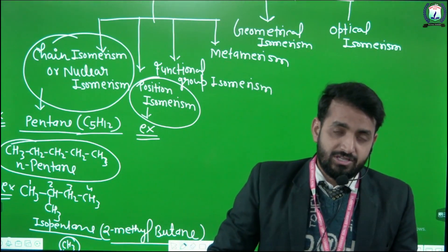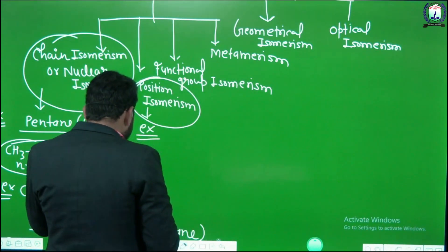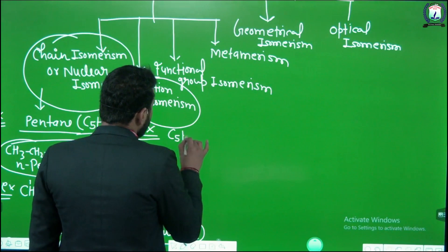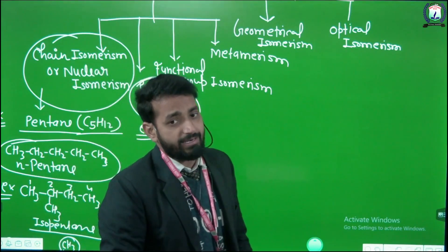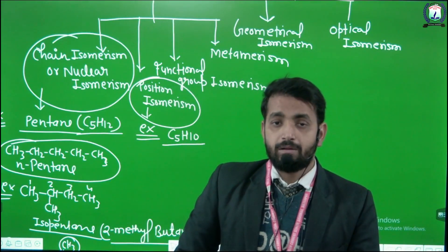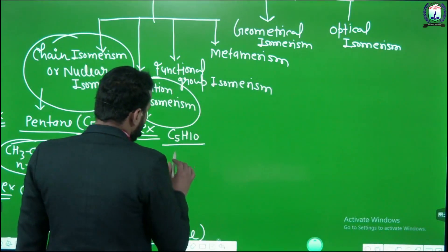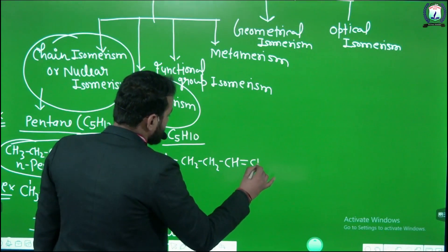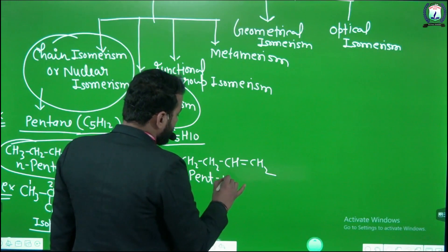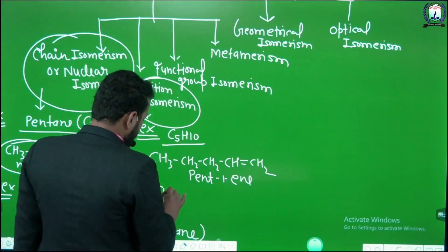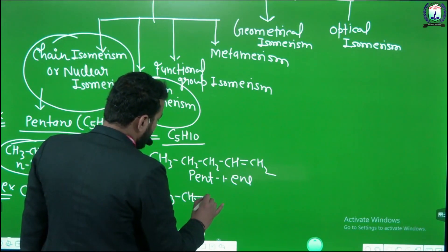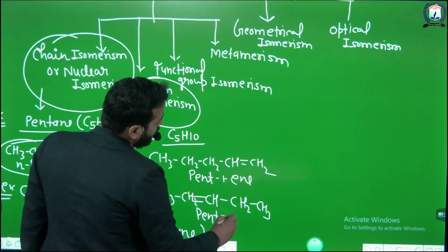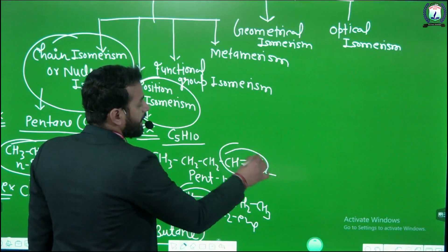For the example of position isomerism, let us take pentene. Pentene has the molecular formula C5H10. In case of an alkene, a carbon double bond is present in the compound. The structure of pent-1-ene is: CH3-CH2-CH2-CH=CH2.